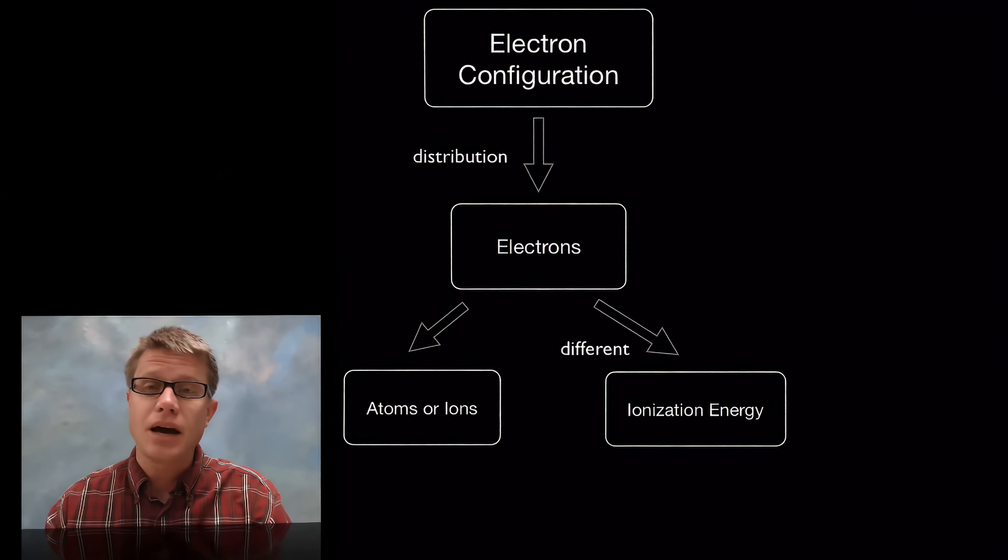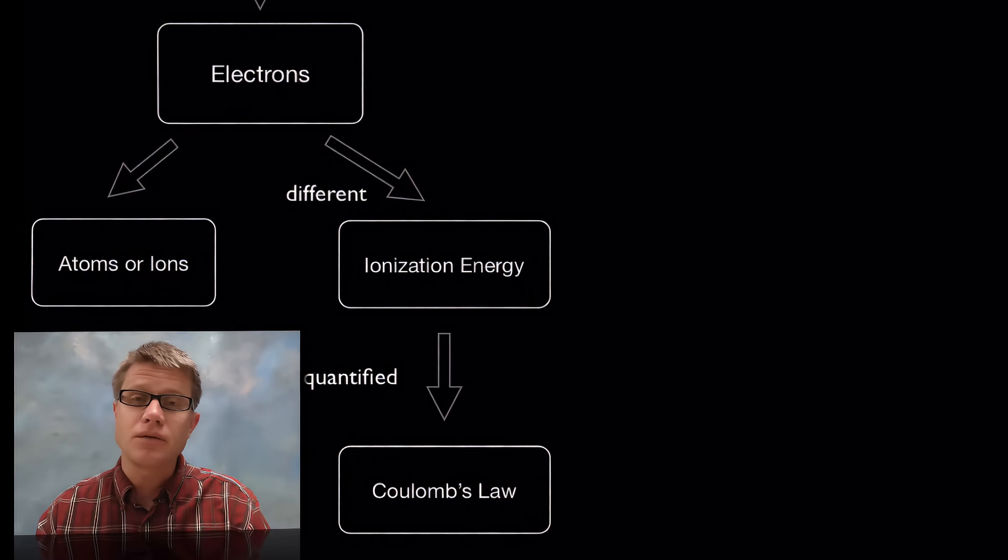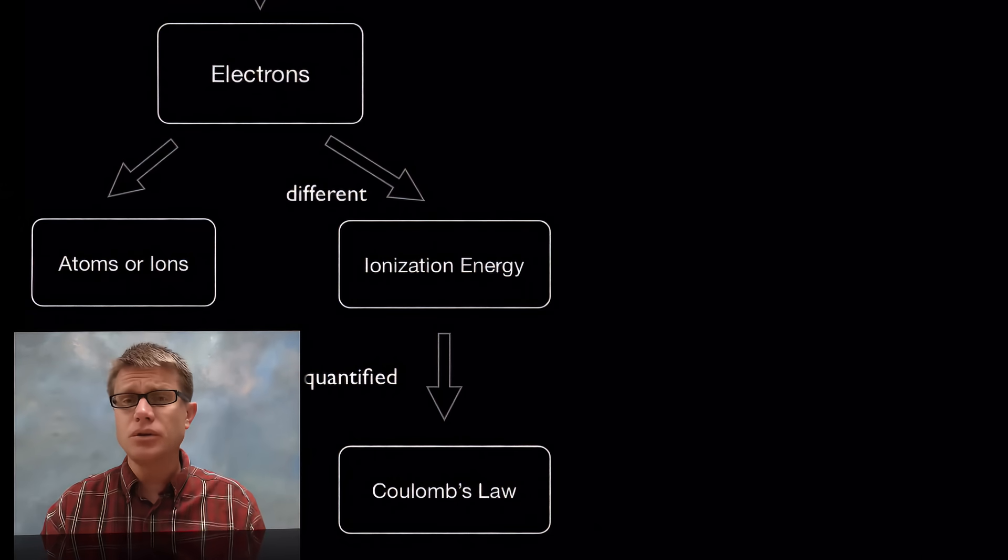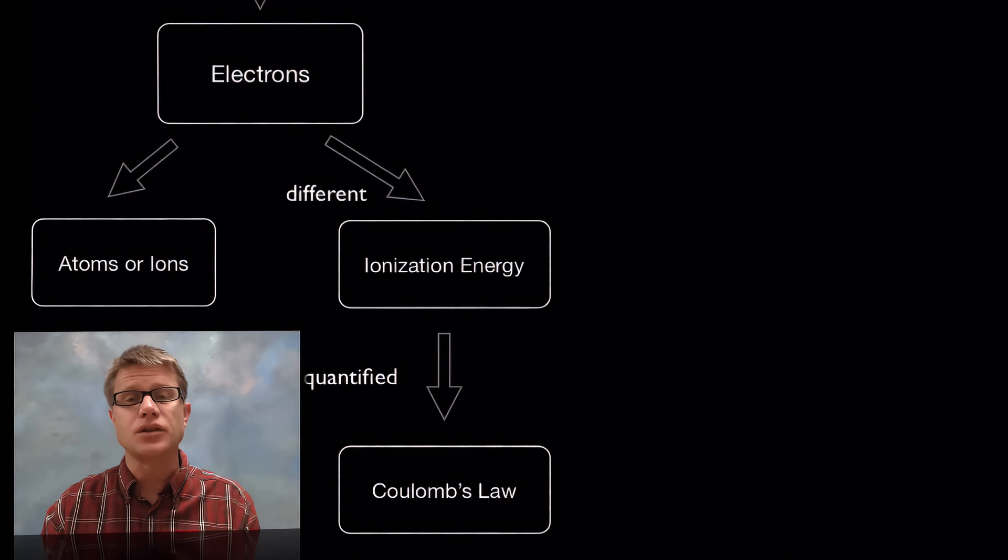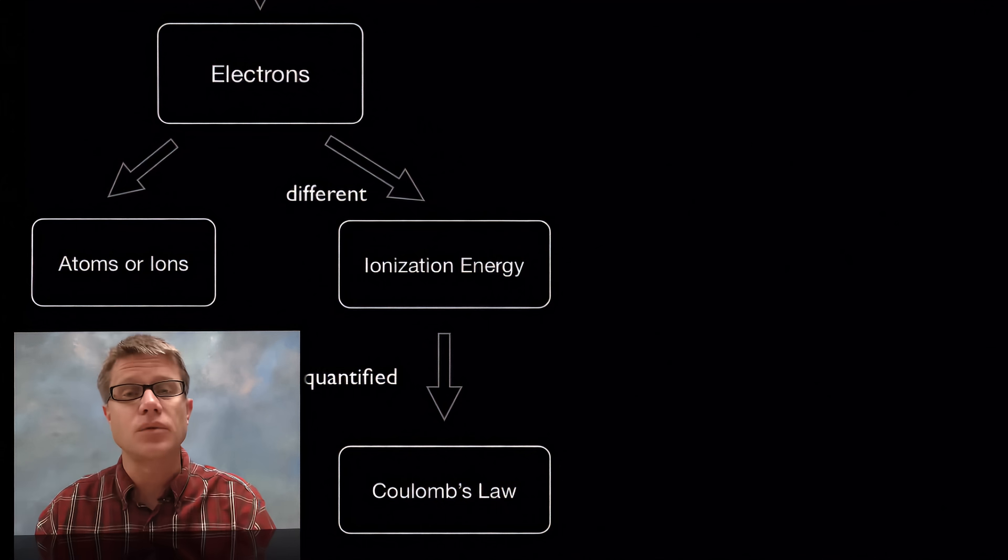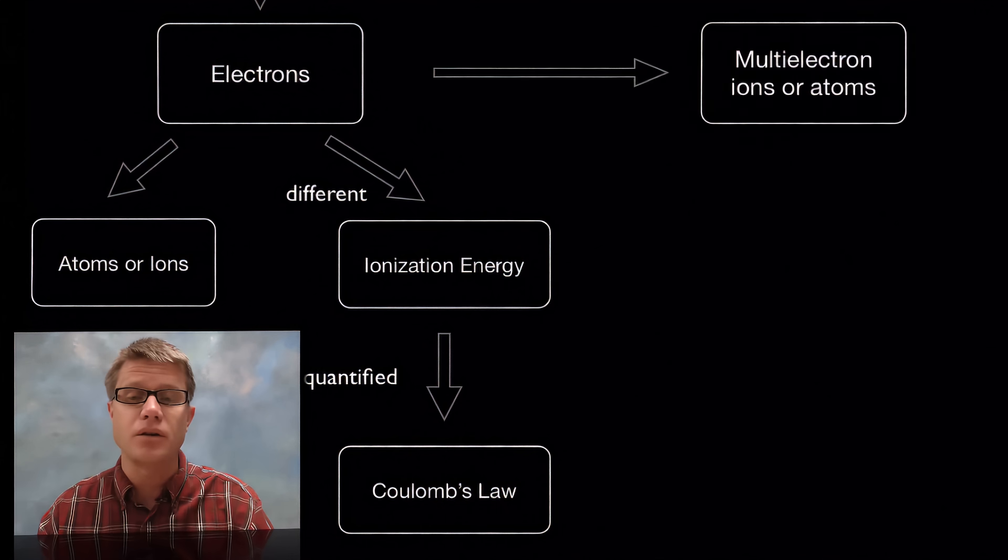And so a good way to figure that out is to look at their ionization energy, which is going to be the amount of energy it takes to pull an electron away. And so we can quantify that by using Coulomb's law. And so what we can do is we can work our way out from the electrons on the inside to those on the outside. And when we're done we have a pretty good picture of where all those electrons are.